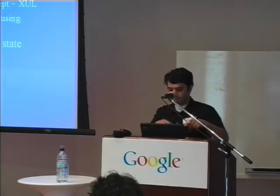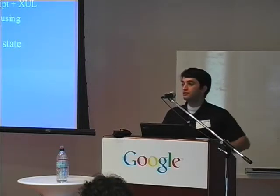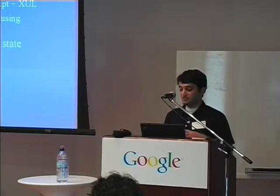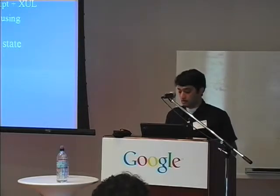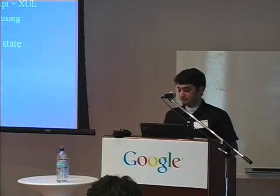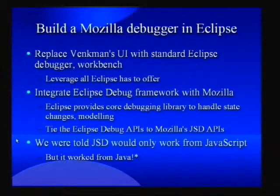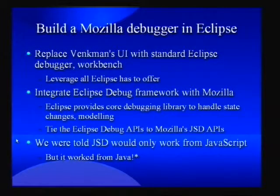A good deal of Venkman's JavaScript code deals with debugging UI, menus, and keeping state of the process. A relatively small amount of it is really responsible for talking to the JSD itself and modeling that data. We were building a toolkit in Eclipse and thought: wouldn't it be fun if we could use Eclipse's debugger interface? Eclipse already has a debugging UI and already has modeling for debug data and events. We could leverage all the other things Eclipse has and make a nice cohesive tool. The challenge is pretty much to tie Eclipse's debug APIs to Mozilla's.